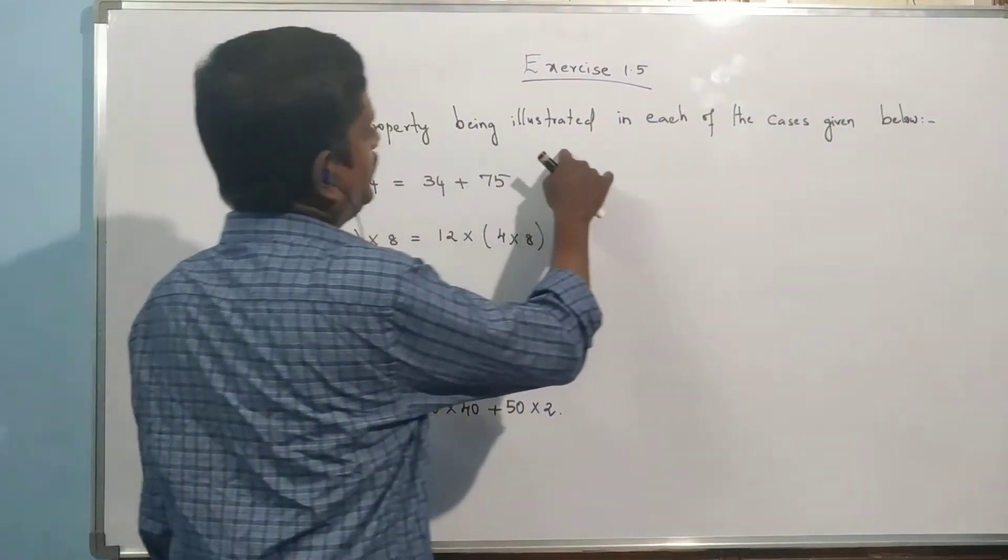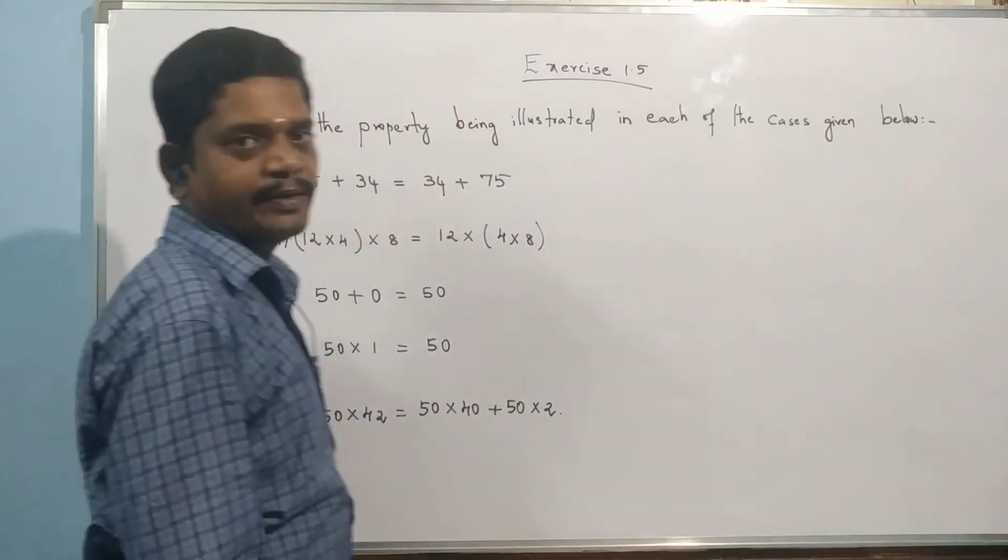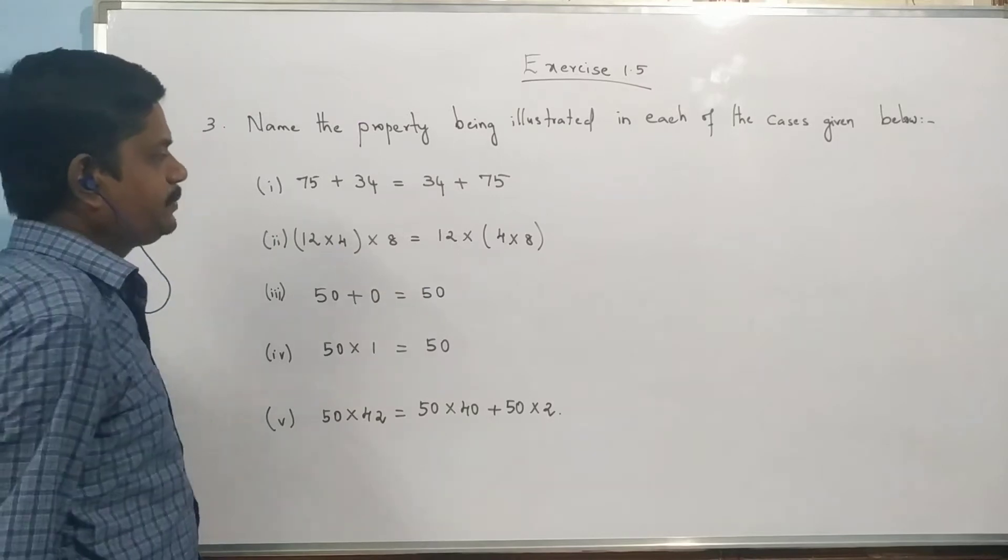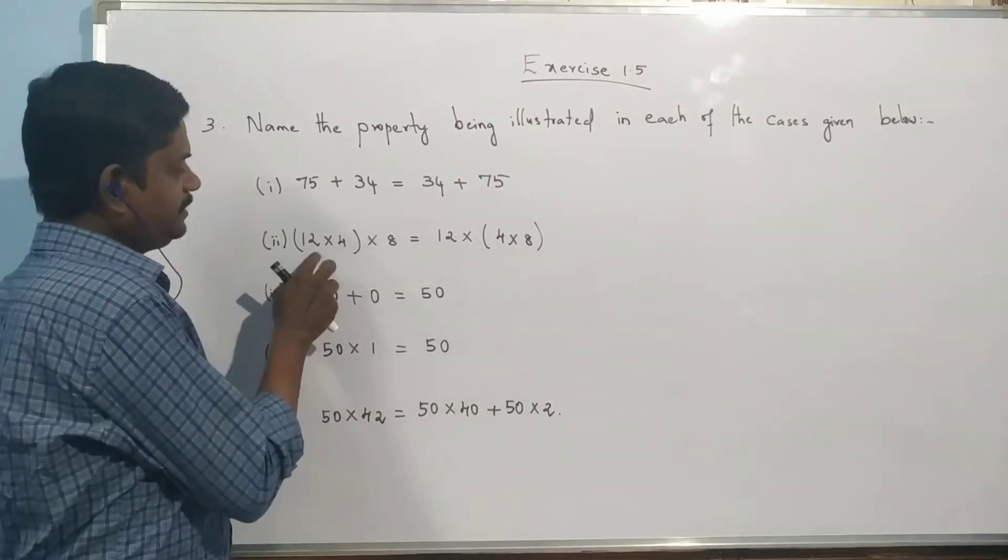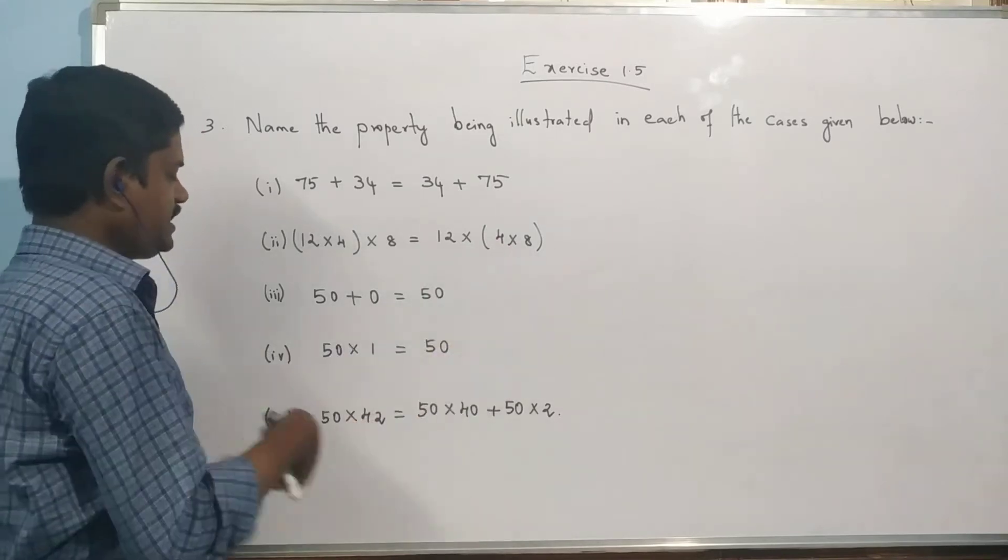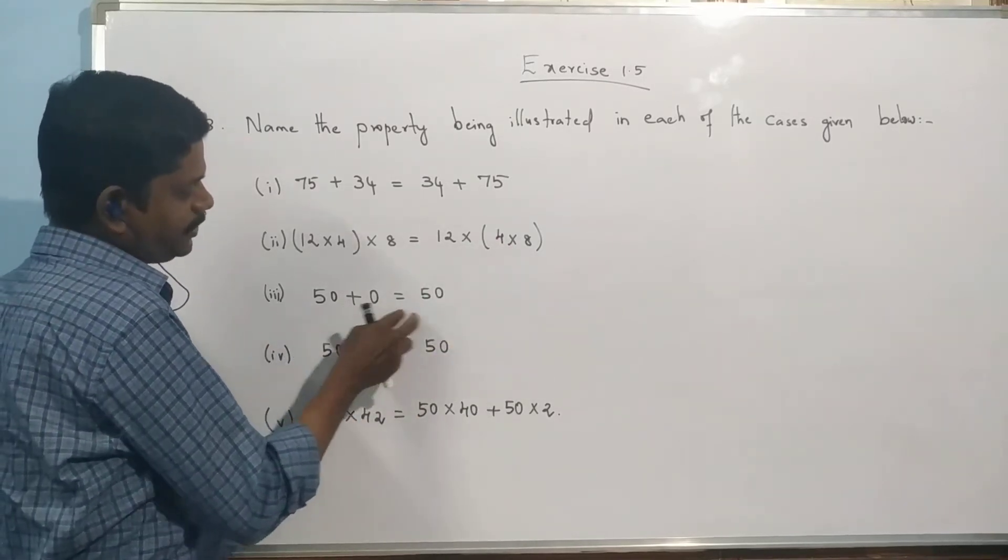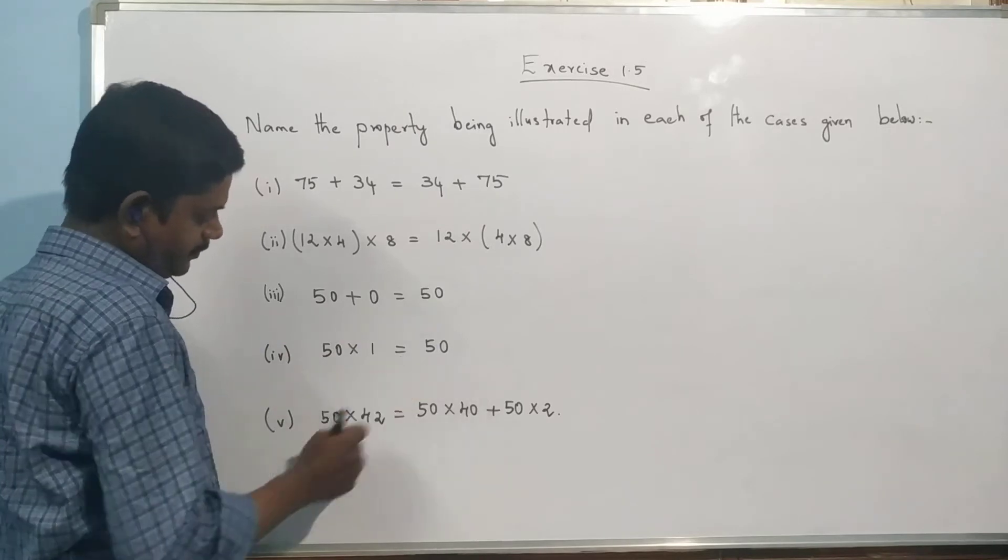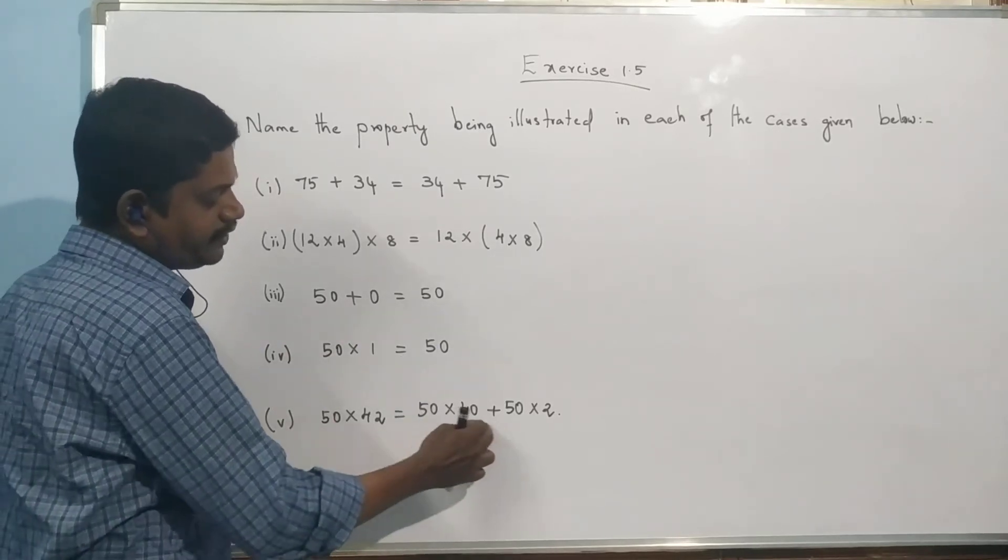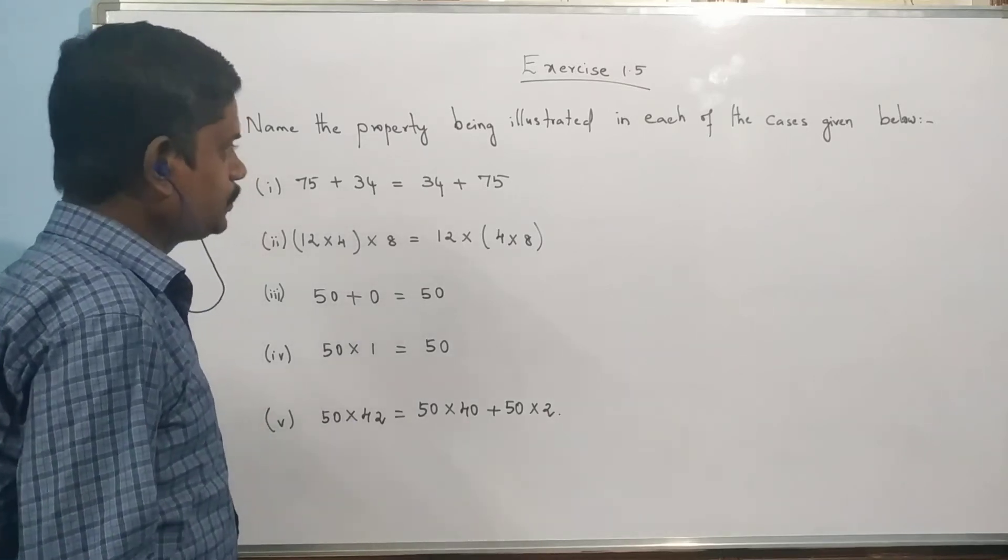Name the property being illustrated in each of the cases given below. First case: 75 plus 34 equal to 34 plus 75. Second: 12 into 4 into 8 equal to 12 into 4 into 8. Third: 50 plus 0 equal to 50. Fourth: 50 into 1 equal to 50. Fifth: 50 into 42 equal to 50 into 40 plus 50 into 2.